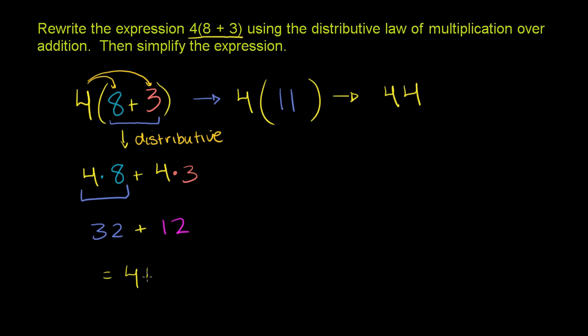And 32 plus 12 is equal to 44 — that is also equal to 44. So you can get it either way. But when they want us to use the distributive law, you distribute the 4 first.